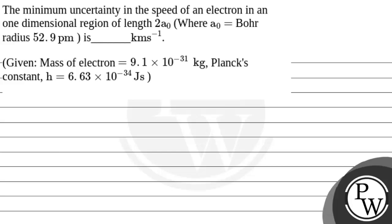Hello, let's read this question. The minimum uncertainty in the speed of an electron in a one-dimensional region of length 2a0, where a0 represents the Bohr radius which is 52.9 picometers — find the answer in km per second. The mass of the electron and Planck's constant values are given in the question statement.